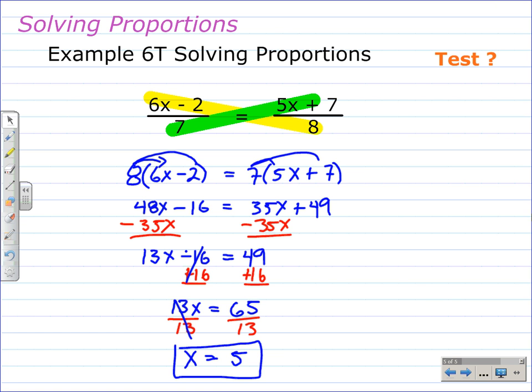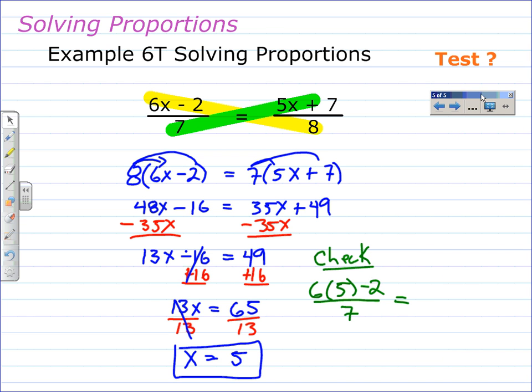And we can check that answer real quick by substituting 5 into the original equation. So on the left that would give us 6 times 5 minus 2 over 7 and that's supposed to be equal to 5 times 5 plus 7 divided by 8.